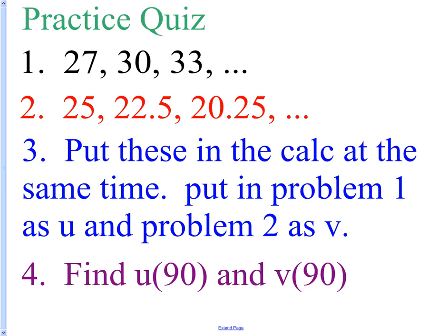Okay. Here's the first couple answers. Check yourself. For the black one, number one, it's U sub 1 equals 27. Quiet, please. U sub n equals U sub n minus 1, and this one is plus 3. You don't have to put that in parentheses, but I did.